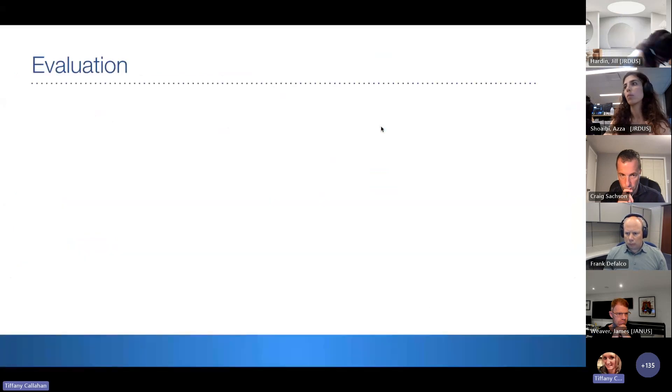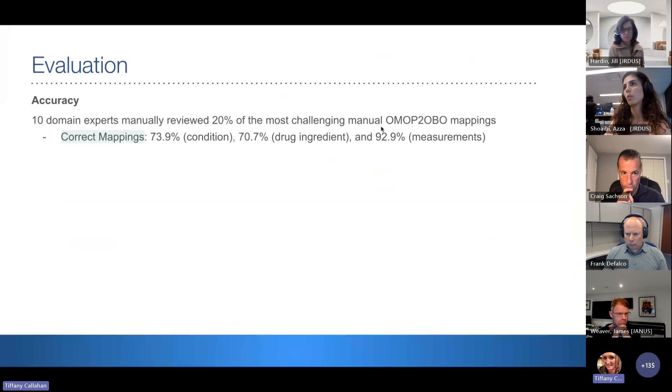And we evaluated the resulting mappings in three ways. So the first was on accuracy. We were fortunate enough to work with 10 domain experts who manually reviewed 20% of the most challenging mappings that we created. And from that, we found that 73.9% of our conditions, 70.7% of our drug ingredient, and almost 93% of our measurement mappings were found to be accurate. So when we say most challenging manual mappings, we mean when the algorithm wasn't able to find a high-confident exact mapping, we were left to then manually map them, and those were the ones we chose to have reviewed.